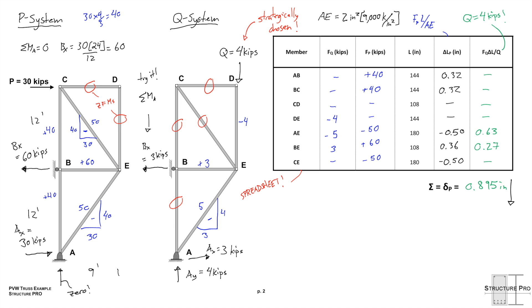So, summing this last column, we find that we have a delta P, or if we recall, that's really a delta D in the vertical direction, of 0.895 inches, and that's going to be in the same direction as Q, so downwards.